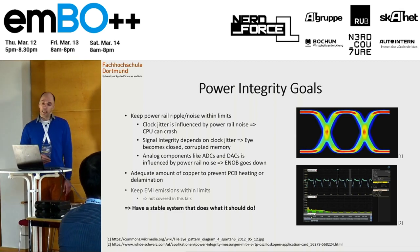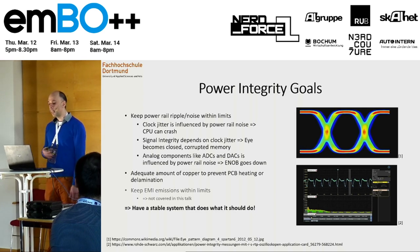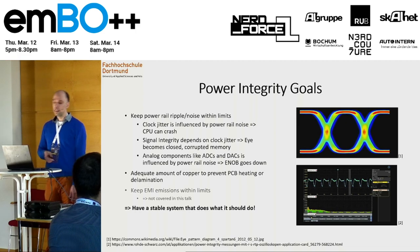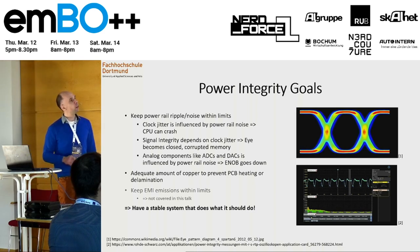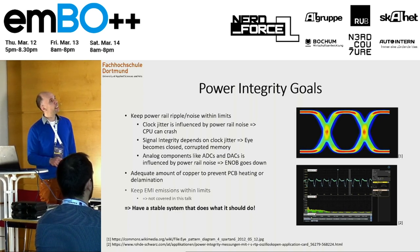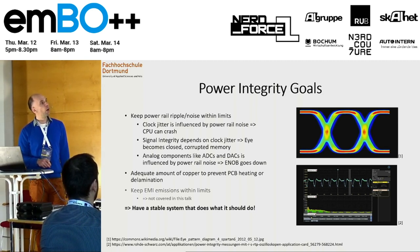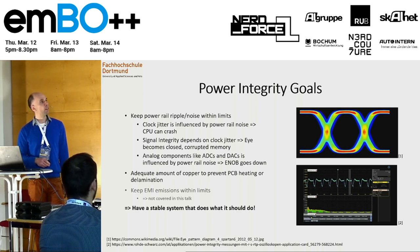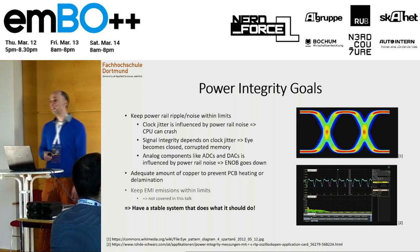Having a bad power rail can cause clock jitter, and clock jitter on the other hand can lead to noise on your power rail — it can cause signal integrity problems. Some of you may know this kind of diagram: it's an eye diagram. Here you have a high signal and here a low signal. And if you have a lot of clock jitter or noise on your power rails, this eye closes, and if this eye closes you get faulty data transmission and have to lower the speed of your transmission.